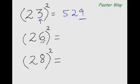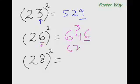Next one, 6 plus 26 is 32, and double of 32 is 64. And 6 square is 36. 64 plus 3 is 67. So the answer is 676.